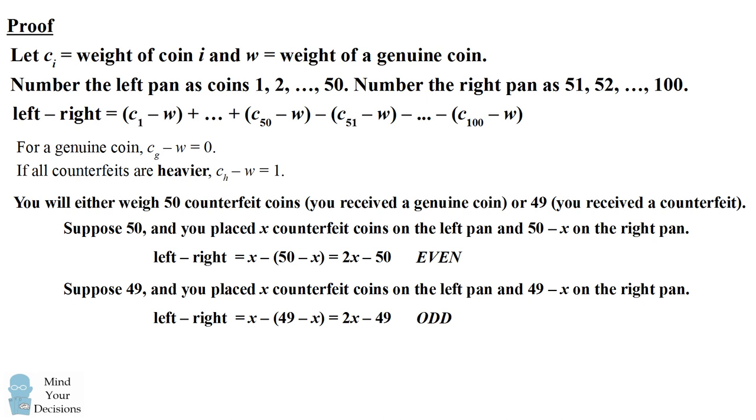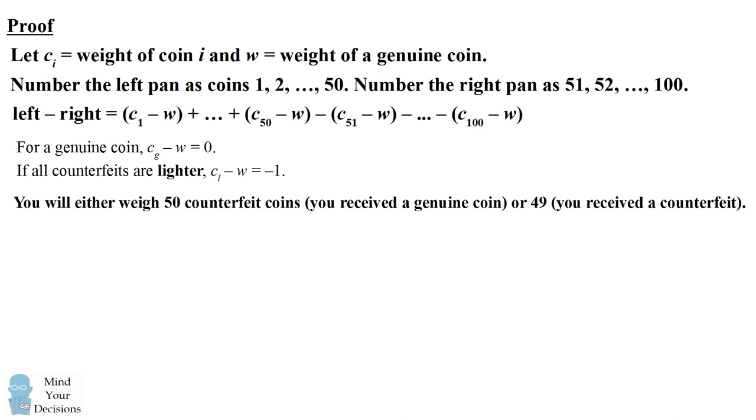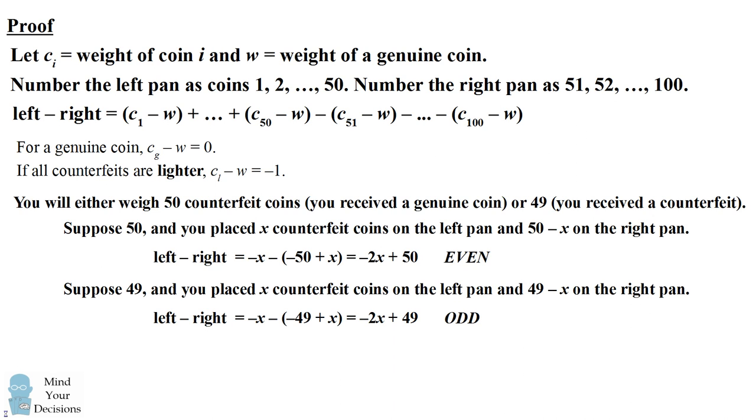So what we figured out is that the evenness and oddness of our result will depend on whether we're weighing 50 or 49 coins that are counterfeit. This will also be true if the counterfeits are all lighter. It's a very similar calculation. If we ended up weighing 50 counterfeit coins, we'll end up with an even result. And if we were weighing 49 counterfeit coins, we would end up with an odd result.